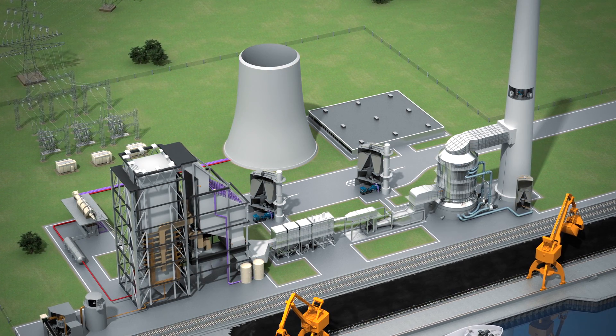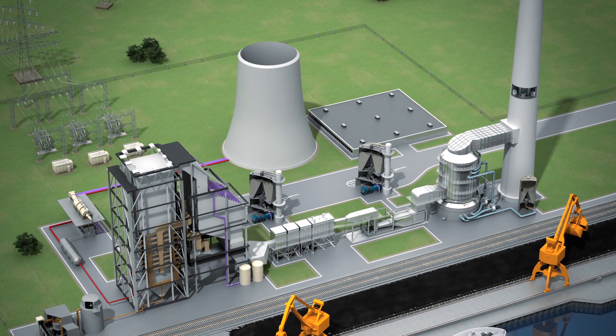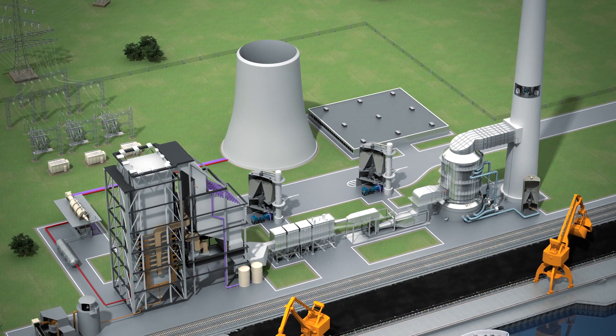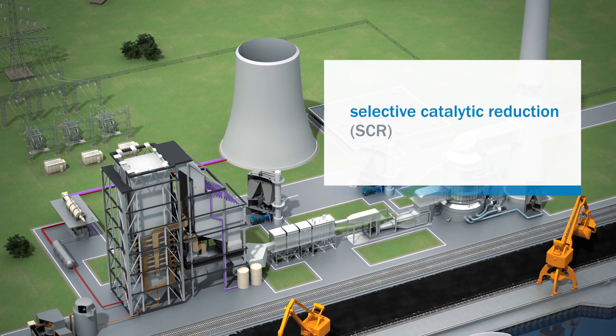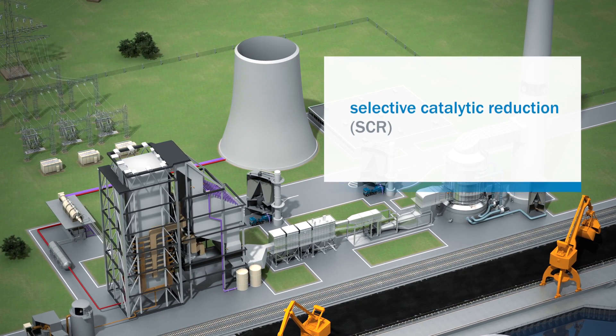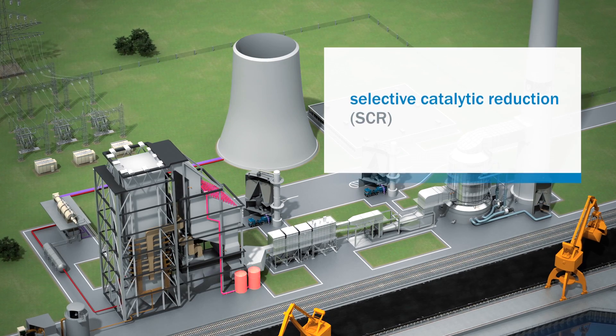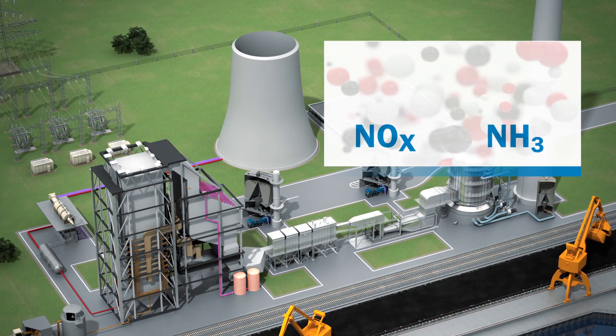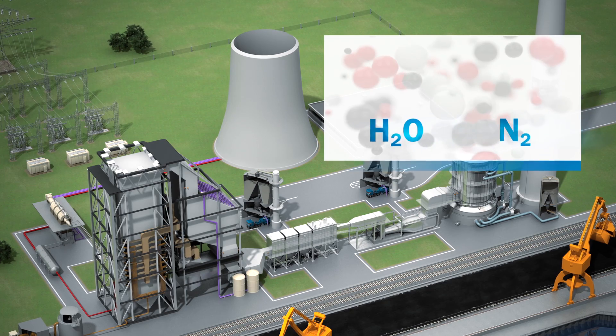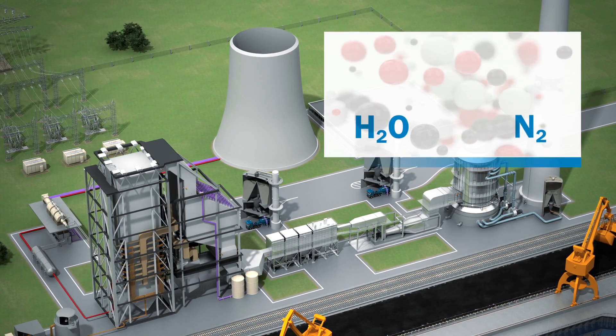Efficient flue gas cleaning is used in modern power stations. A secondary method used to reduce NOx is the Selective Catalytic Reduction or SCR process. It uses ammonia for conversion of NOx to nitrogen and water. The chemical reaction is accelerated using a catalyst bed.